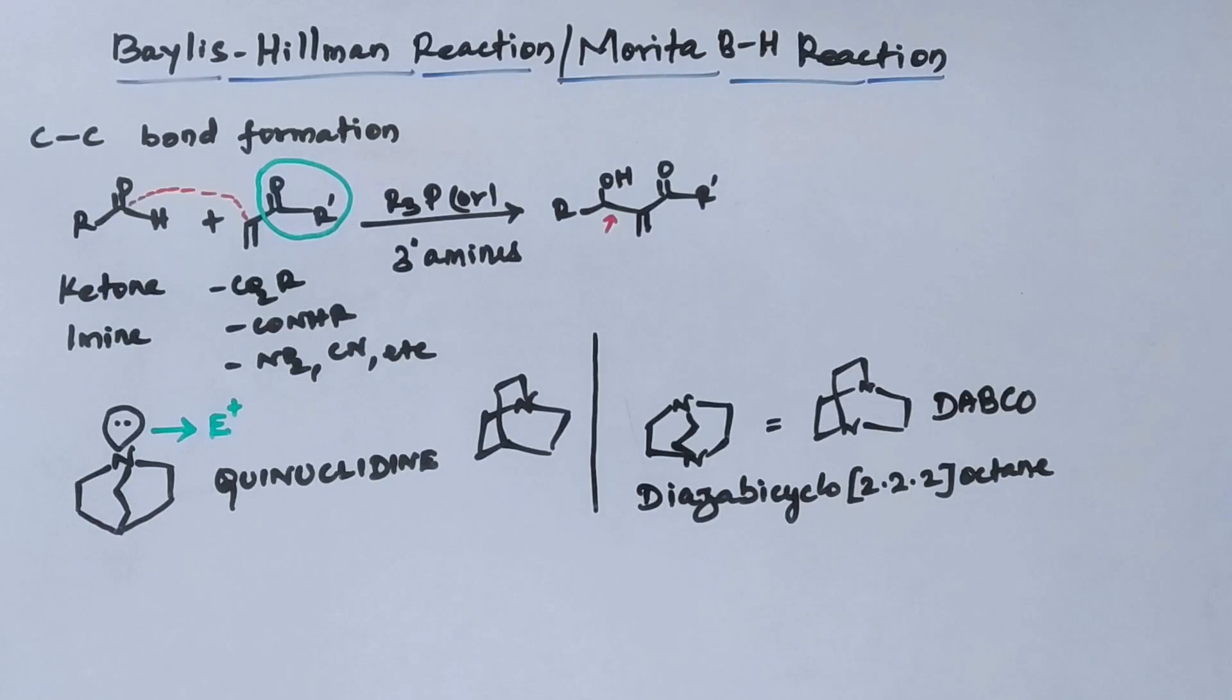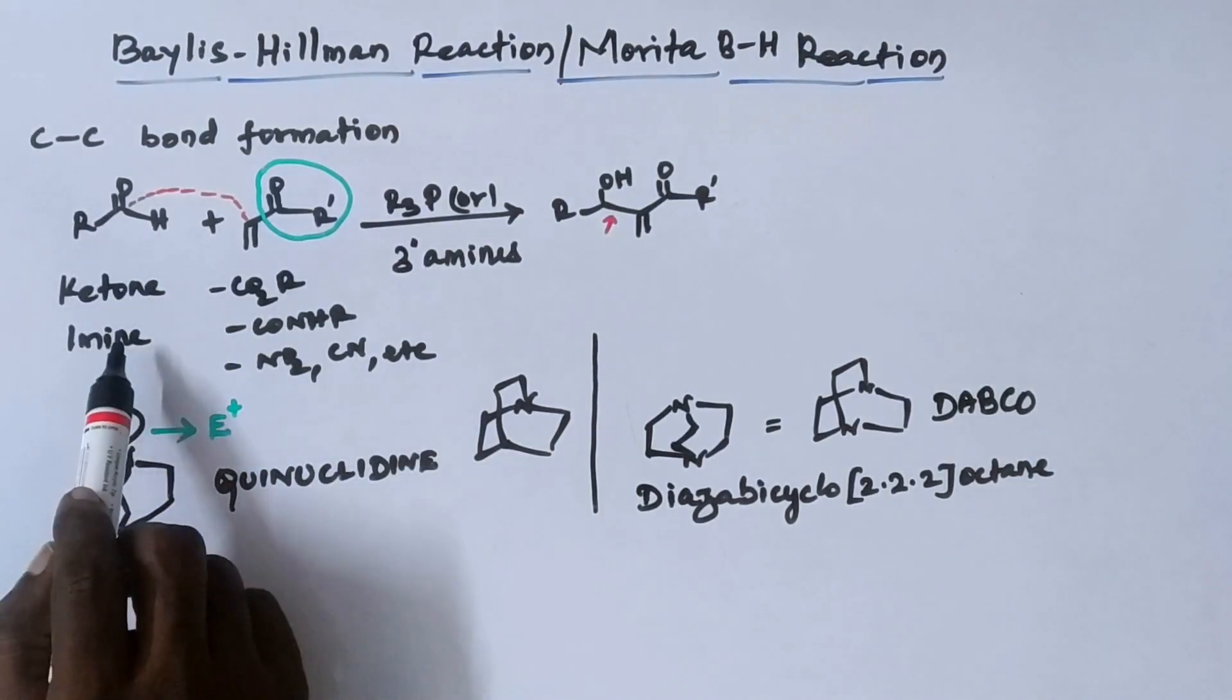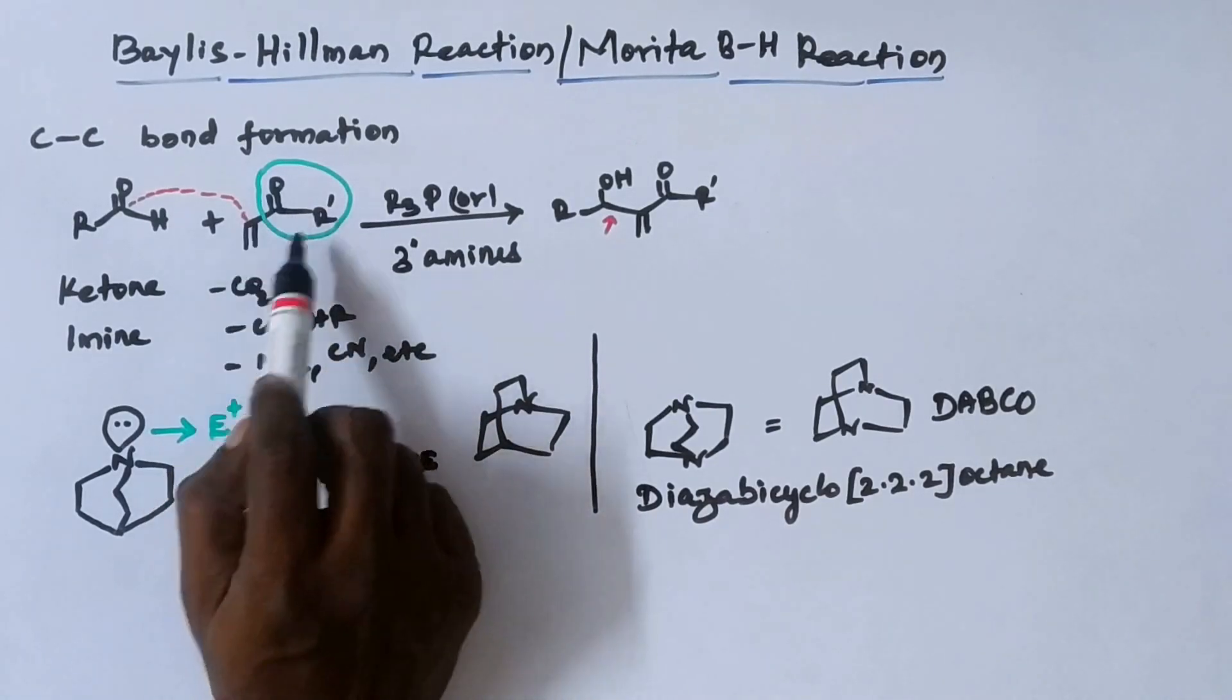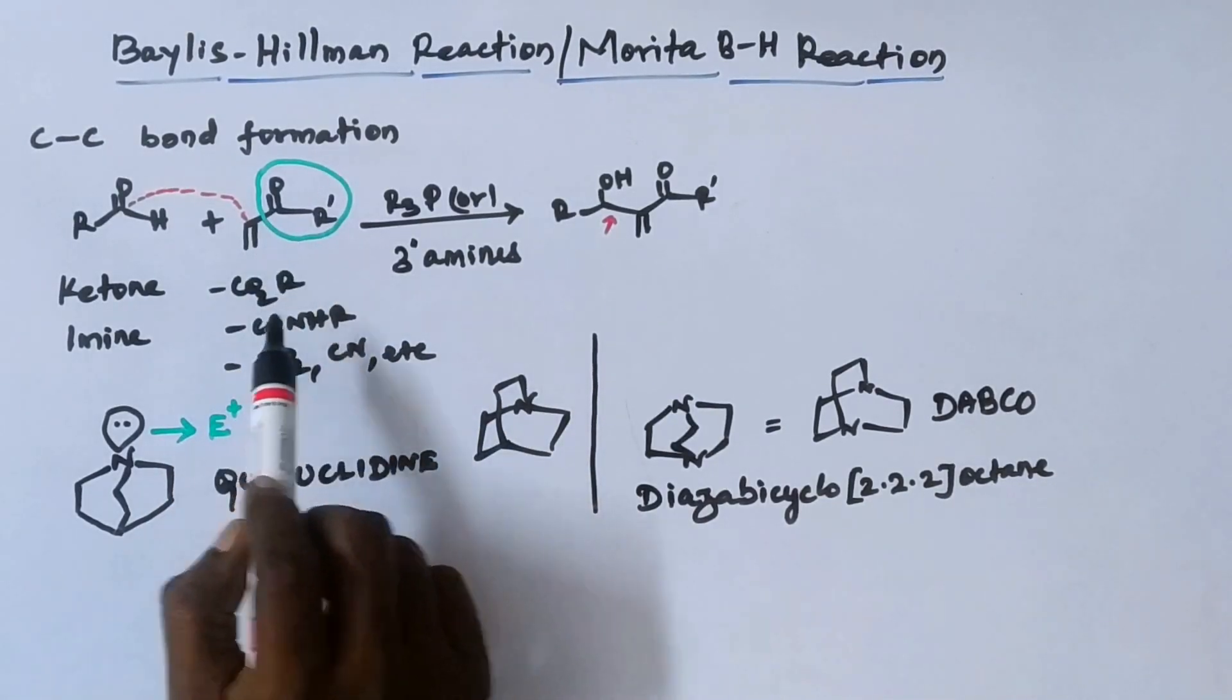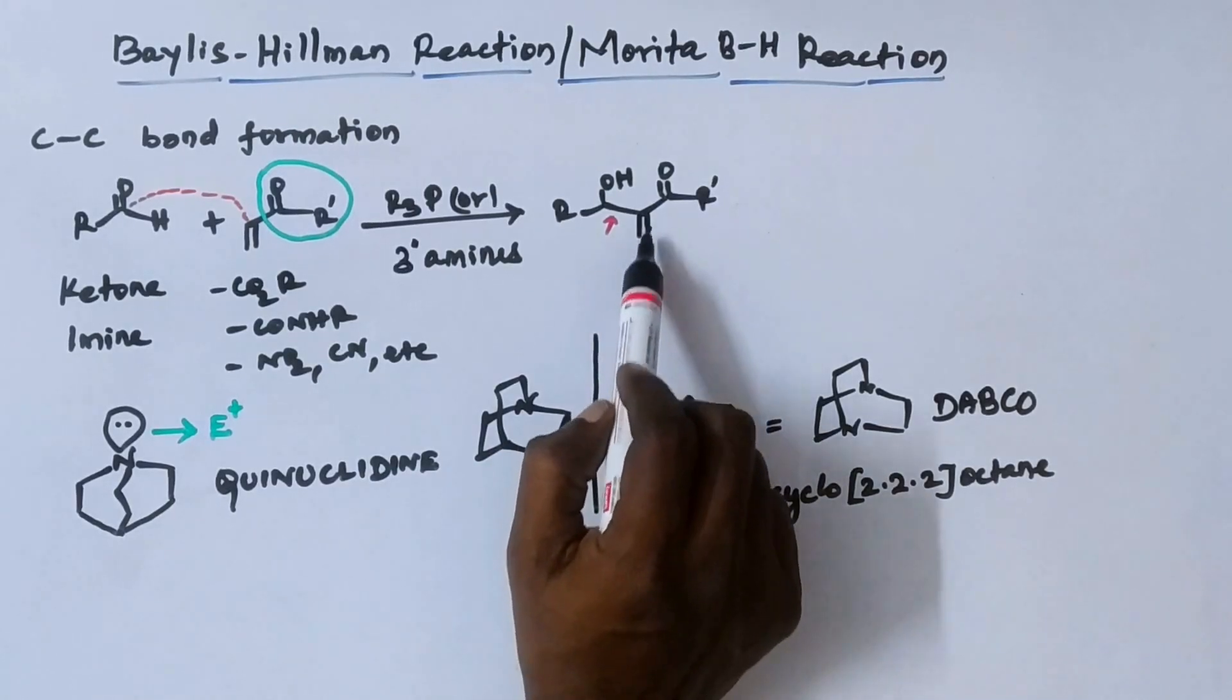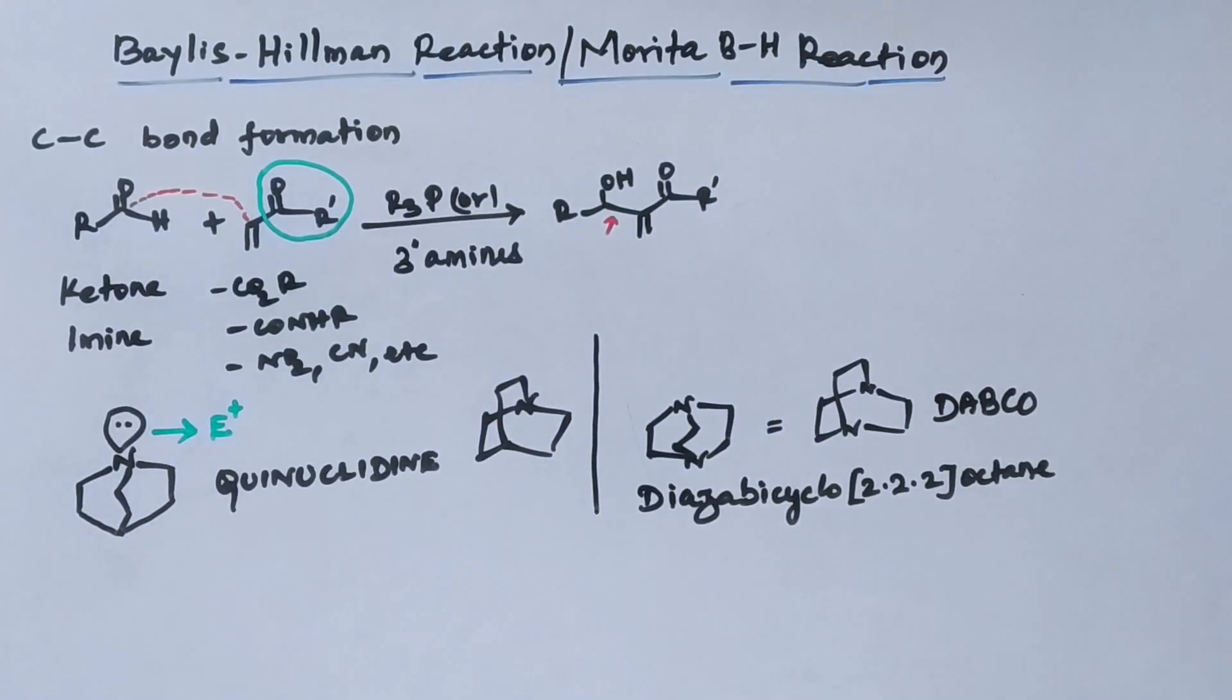If we compare all these bases, DABCO is predominantly used in Baylis-Hillman reaction. So wherever you see Baylis-Hillman reaction, most of the time you can see DABCO being used as a catalyst and base. So an aldehyde or ketone or imine reacts with an activated olefin, an olefin bearing an electron withdrawing group, giving an aldol-like product bearing a methylene group at the alpha position. This is all about Baylis-Hillman reaction.